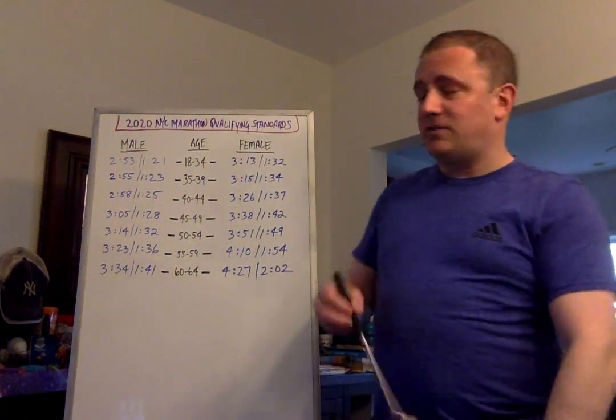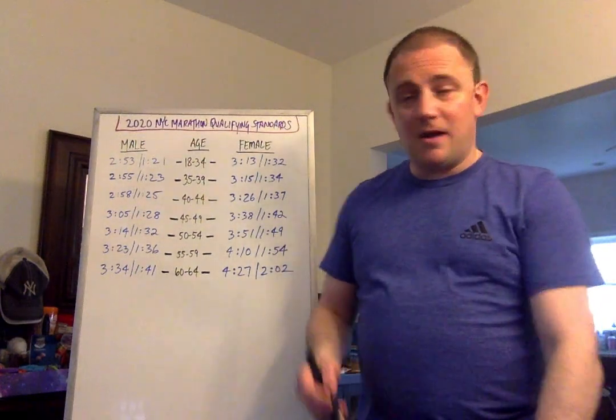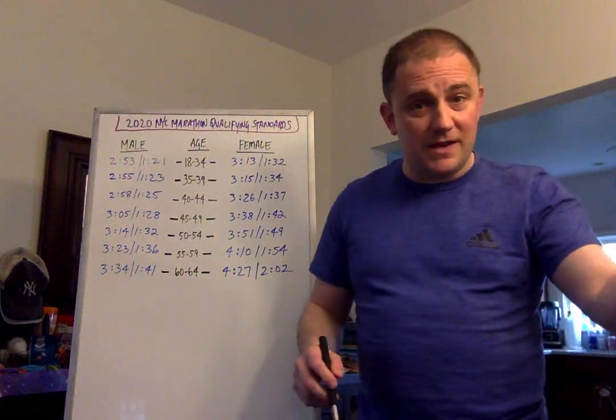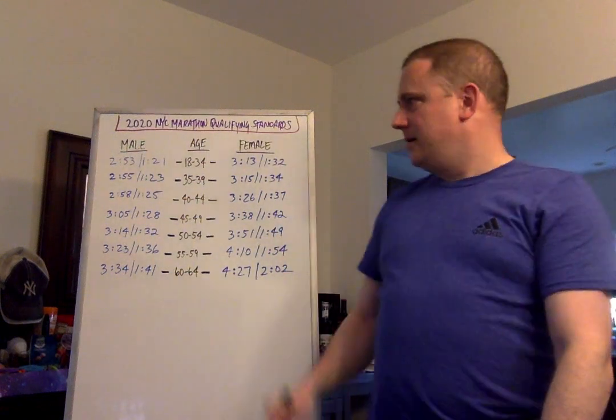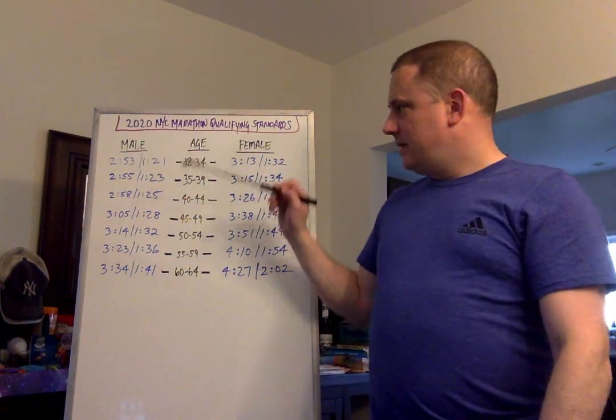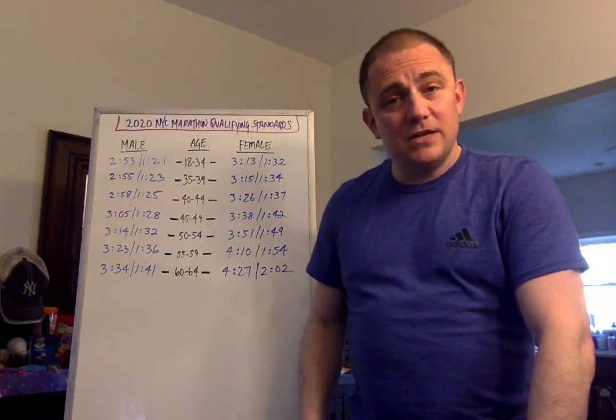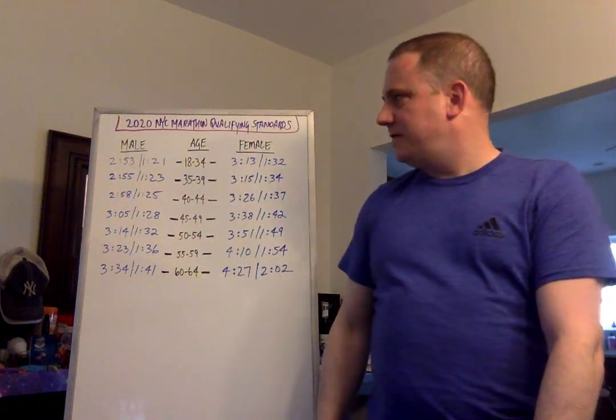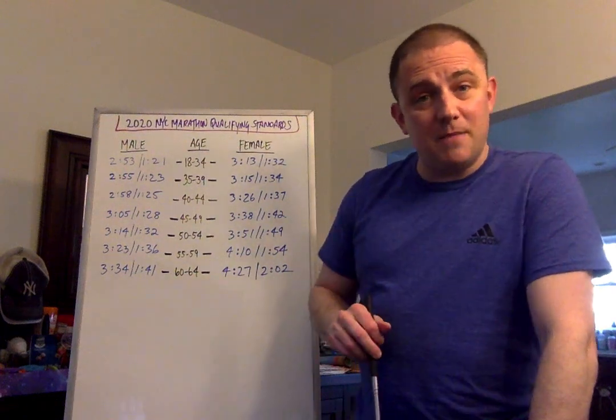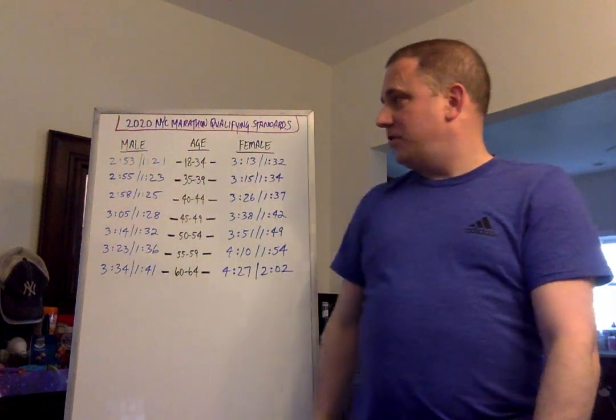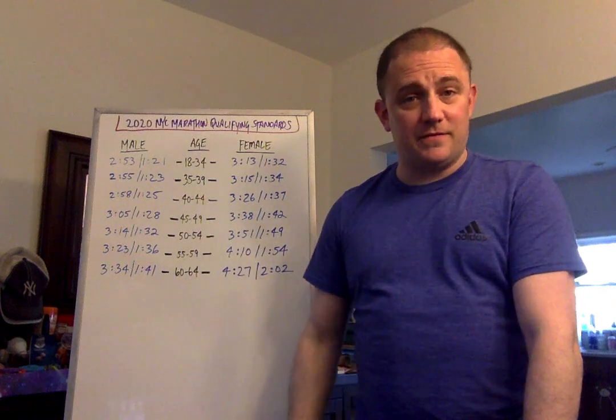And now for the women you have to run 3:13 flat for the marathon or faster for the marathon, or 1:32 flat for the half or under. That's 18 to 34. 35 to 39 year old age group, 2:55 or faster. 2:55 flat or faster for the marathon for the men and 1:23 flat or faster for the half marathon.